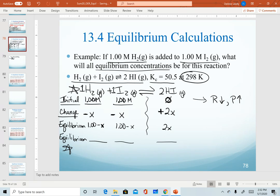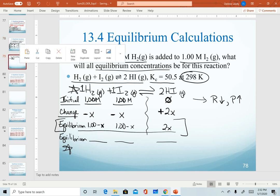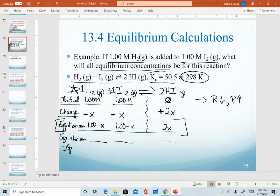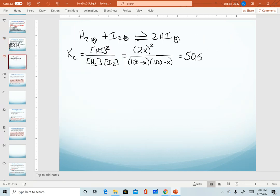Step four is to now plug in our equilibrium quantities from this third line into that expression. So realize we've determined that this is how much we'll end up with at equilibrium. And I've also determined that this is the equation they go into. So HI we solved as 2x at equilibrium, but remember that gets squared. Hydrogen is 1.00 minus x as is iodine. And in our original question, we were given the value of Kc as 50.5.